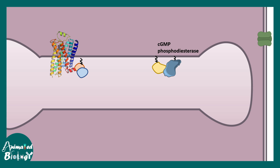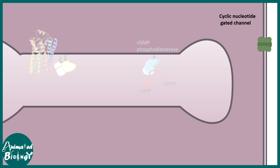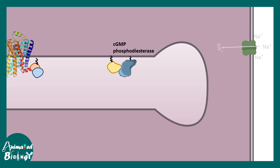Cyclic GMP phosphodiesterase degrades cyclic GMP into GMP. Cyclic GMP is critical for the cyclic nucleotide-gated ion channel, which normally allows sodium to enter the cell and depolarizes the neuron. When light is present, this sodium entry is blocked because cyclic GMP is converted to GMP — this is the light response.